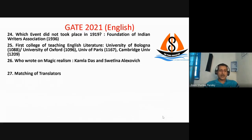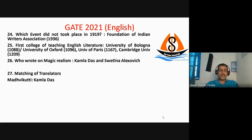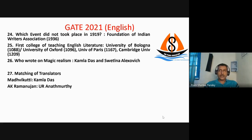There were various matching questions. One was matching translators: Madhavikutty wrote My Story in Malayalam and when she changed her name to Kamala Das, she herself translated her autobiography from Malayalam into English — so Madhavikutty is to be matched with Kamala Das. A.K. Ramanujan translated Rites of Passage by U.R. Ananthamurthy. Two more options were there that I'm not able to recall.